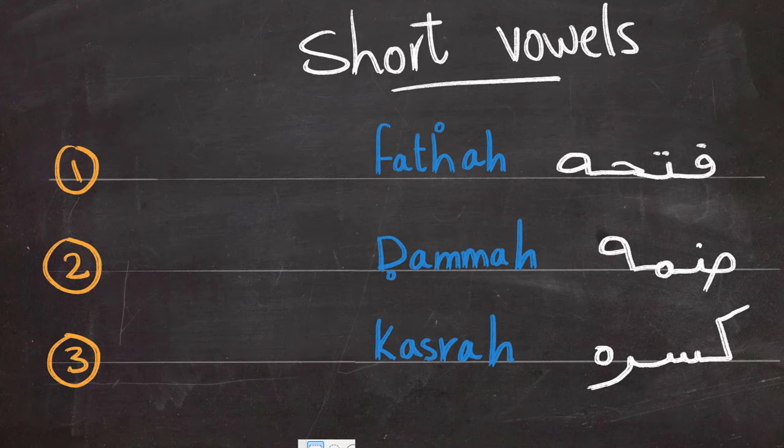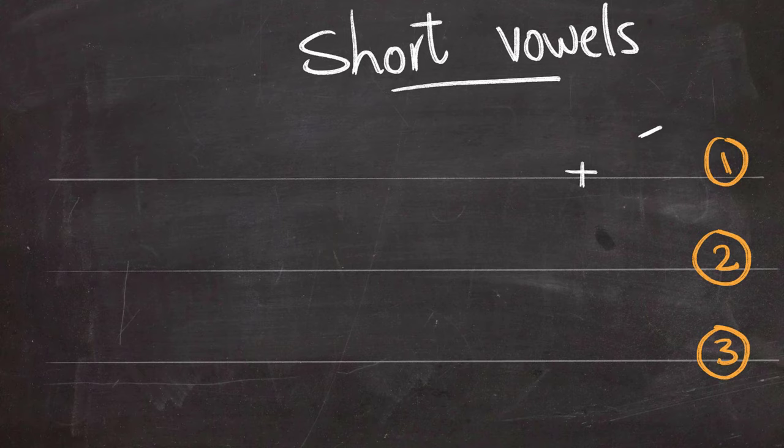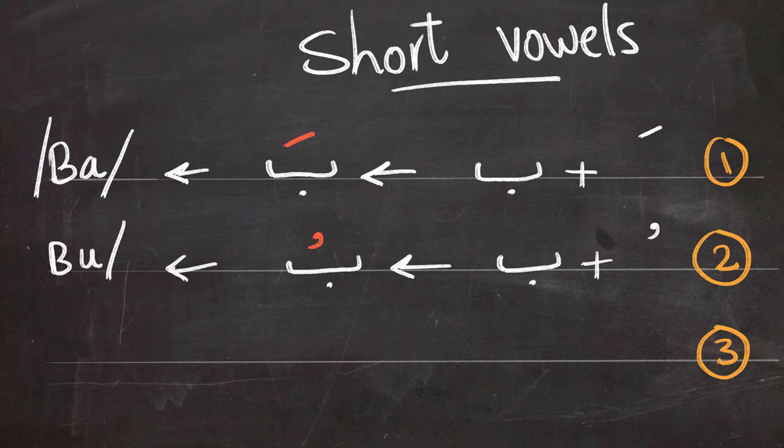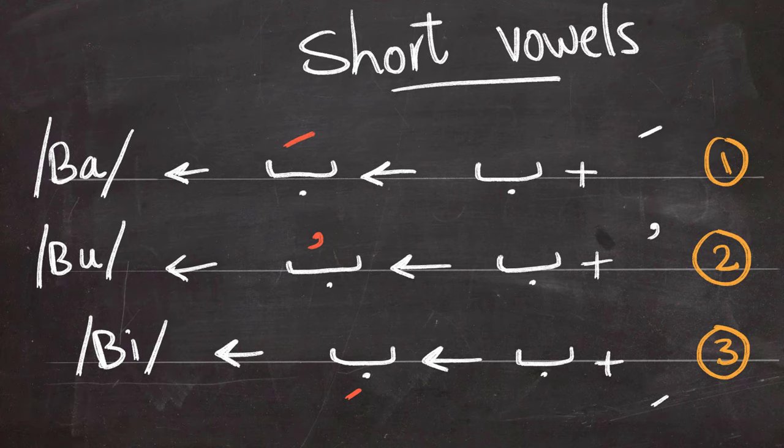So let's see how these short vowels work. If you add Fatha to B, you're going to get Ba. If you add Domm to B sound, you're going to get Bu. While if you add Kasra to B, you're going to get Bi sound. So Ba, Bu, Bi.